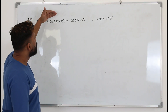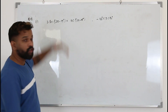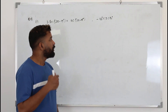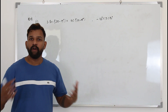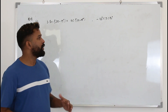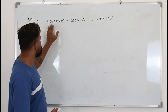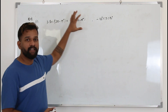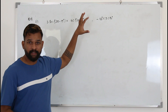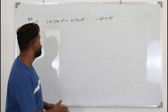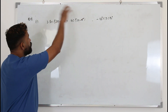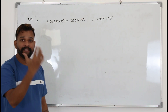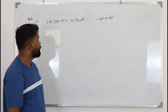Here we are going to solve this trigonometric equation. If you want to solve a trigonometric equation you are not supposed to have more than a single trigonometric ratio. So you have to find a way to convert them into a single trigonometric equation.